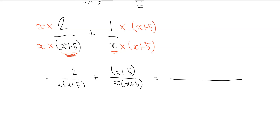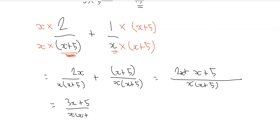So now we can write x(x+5) as the denominator and at the top we've got 2x plus x plus 5. I made a mistake there — this should say 2x. So now we've got 3x plus 5 divided by x(x+5). And that is actually our final answer — we can't simplify that equation anymore.